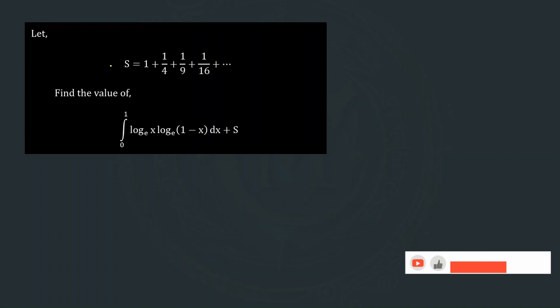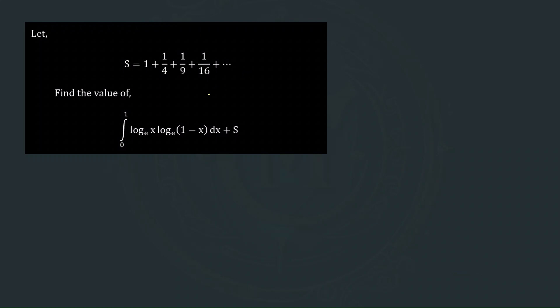Here it is saying: let S equal to 1 plus 1/4 plus 1/9 plus 1/16 plus so on up to infinity. Then find the value of this integral plus S. So this series is S = 1 + 1/2² + 1/3² + 1/4² + ... up to infinity, which equals the summation of 1/r² where r runs from 1 to infinity.